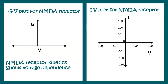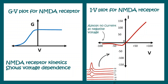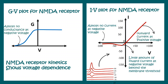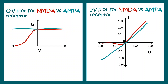For comparison, the NMDA receptor — another ionotropic glutamate receptor — shows a very different IV and GV profile. Its IV plot reveals almost no current at negative voltages, a small amount of current as the membrane potential becomes slightly more positive, and outward current at positive voltages. Similarly, the GV plot shows no conductance at negative voltages, demonstrating voltage-dependent kinetics. When both curves are superimposed, NMDA is shown in red and AMPA in green.